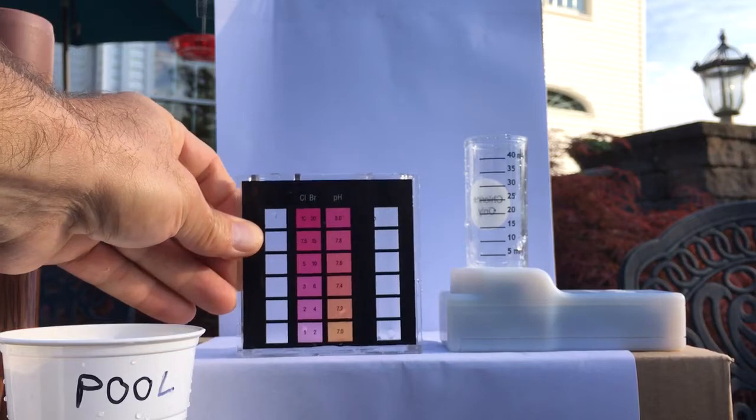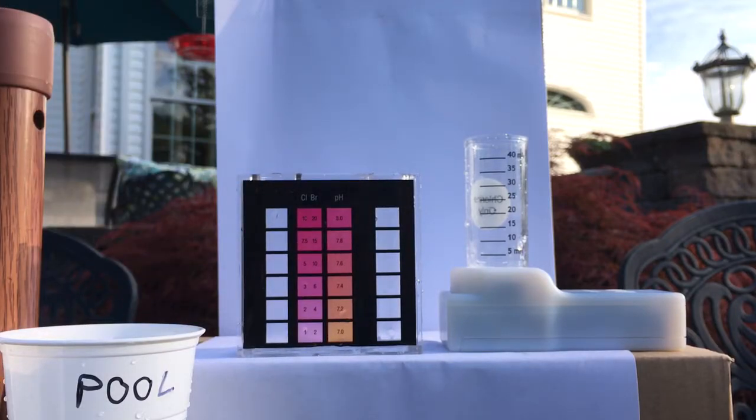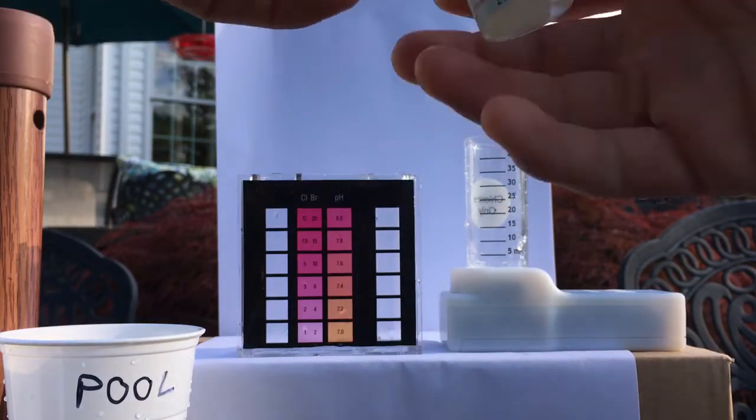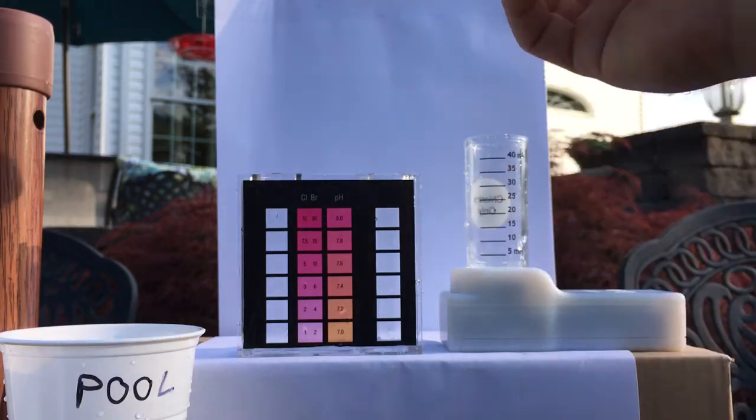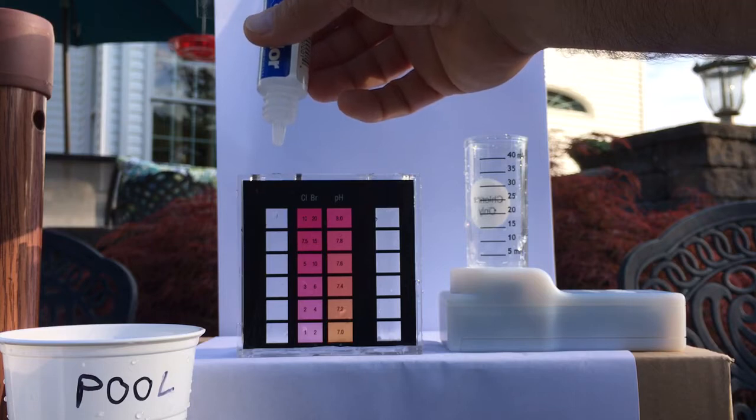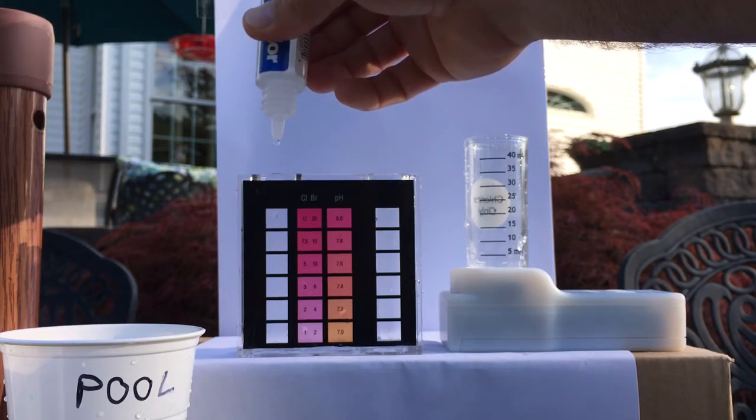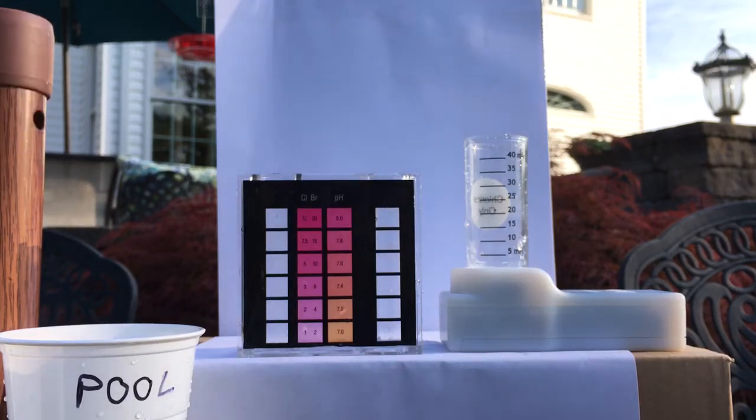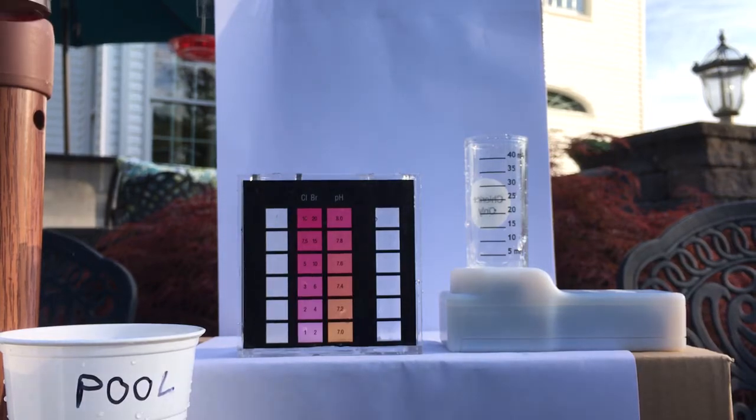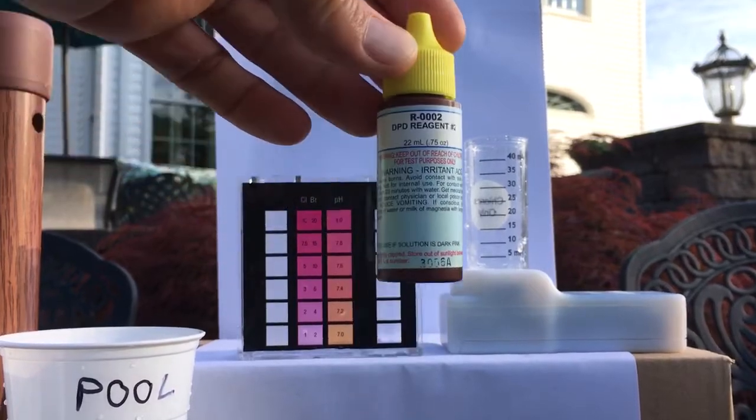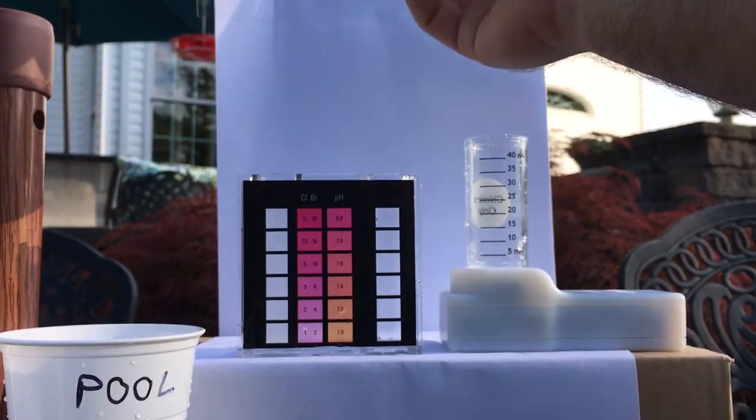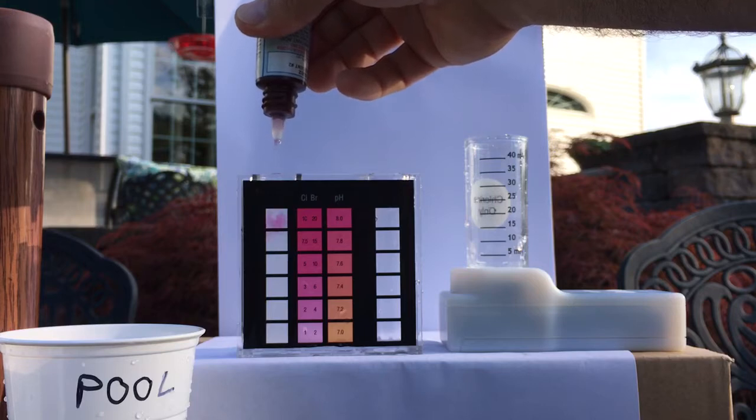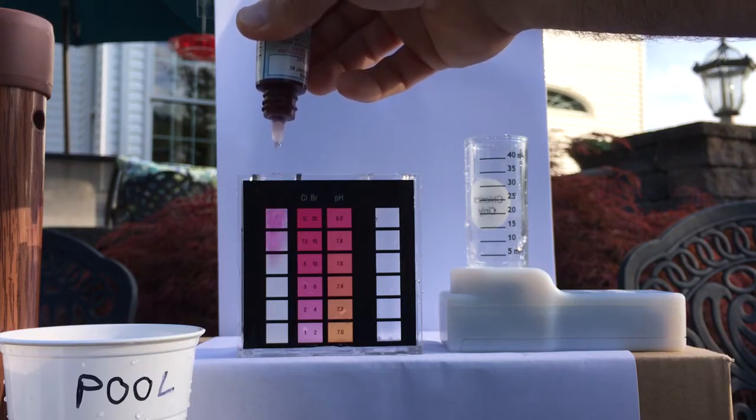So for that test, first we take Taylor reagent R0001 and we're going to add five drops of that. I hold the vial completely vertical here and slowly drip it out: one, two, three, four, five, just allowing the drops to fall off of the tip. Next we do five drops of the R0002, same way, nice and slow, just let them fall off the tip: one, two, three, four, five.